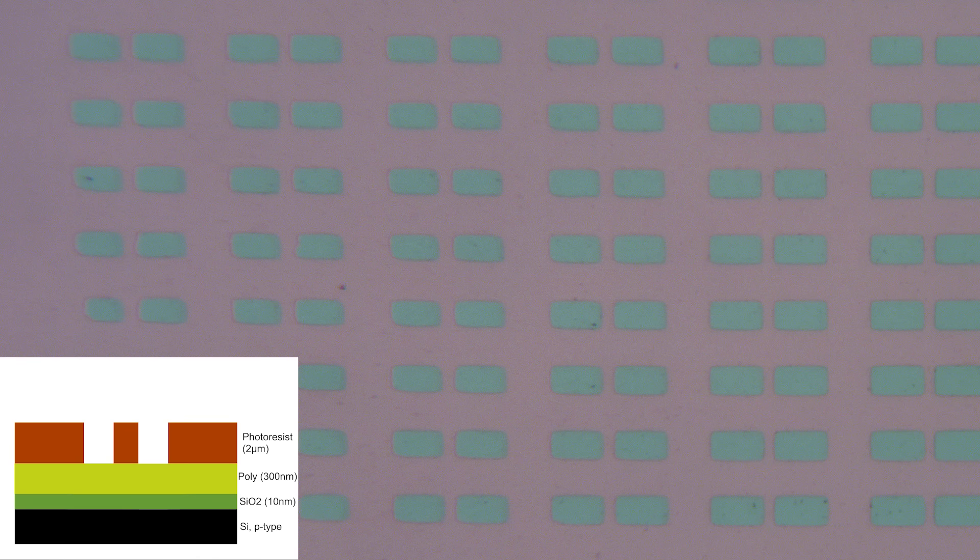I can put it under a microscope to inspect it and make sure everything worked out well. If it didn't, you can always just strip off the photoresist layer and try again with maybe a different exposure or development time.